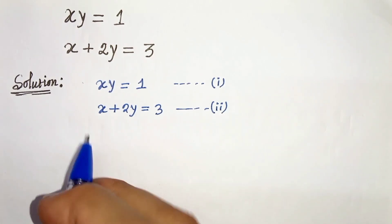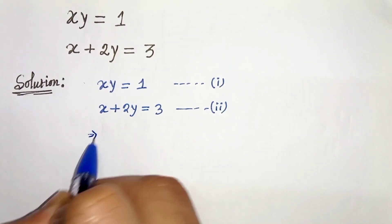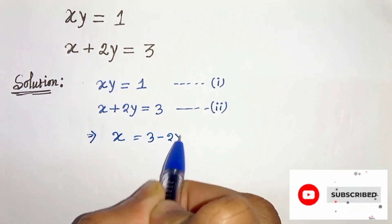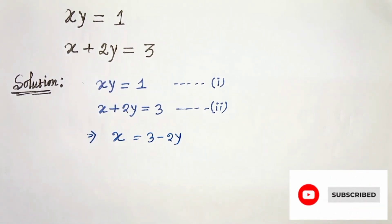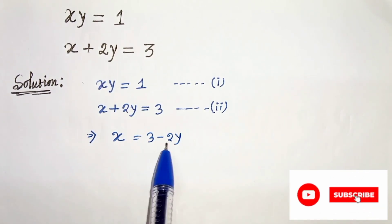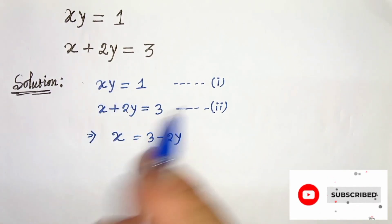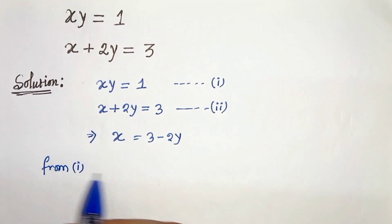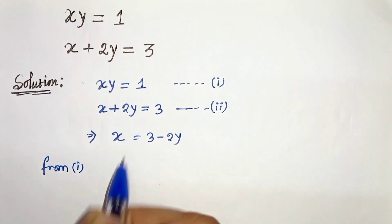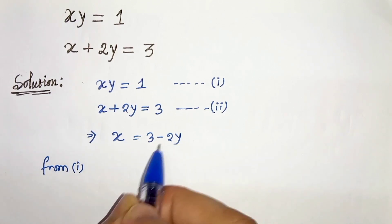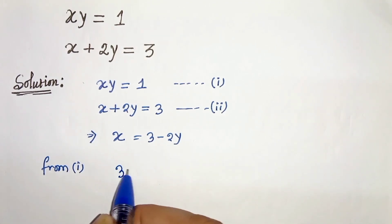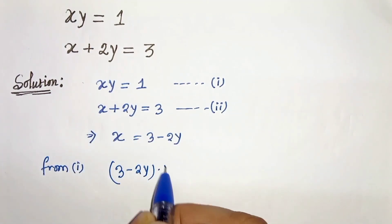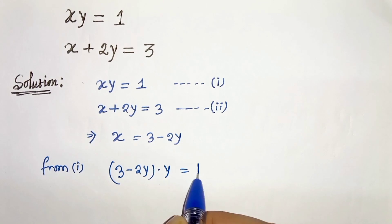First of all, let's simplify this. From equation 2 we can write x equals 3 minus 2y. Now let's put the value of x into equation 1. So from equation 1 we can write x·y equals 1, which gives us (3 minus 2y) times y equals 1.